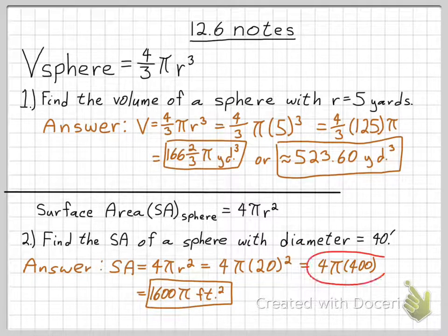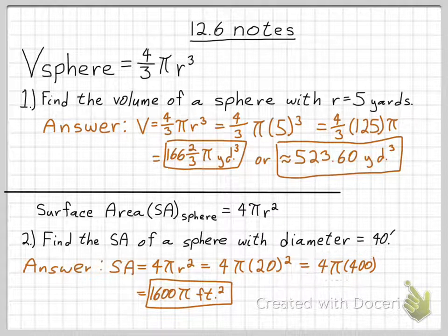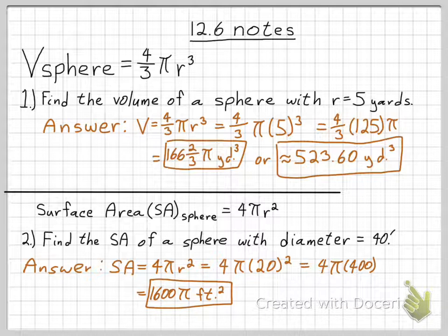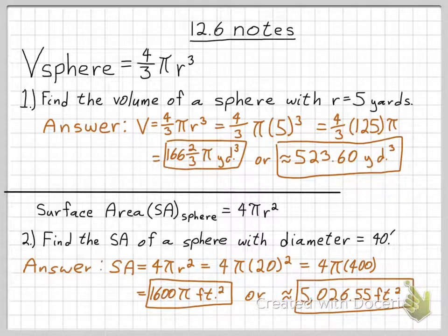So I'm just working that out. And 4 times 400 is 1600 pi square feet is the surface area of this sphere or this ball. And then if you multiply 1600 by pi, you get 5026.55 square feet.